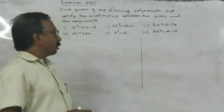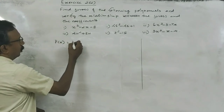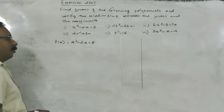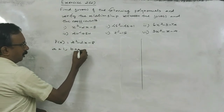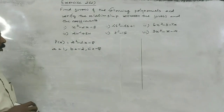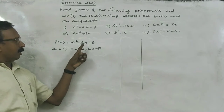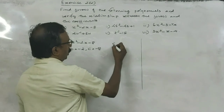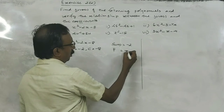First question: p of x is equal to x squared minus 2x minus 8. Here, a is equal to 1, b is equal to minus 2, c is equal to minus 8. The coefficient of x squared is 1, coefficient of x is minus 2, and the constant is minus 8. The sum is equal to minus 2 and product is equal to minus 8.